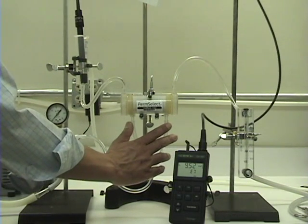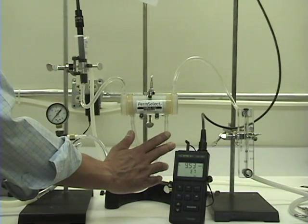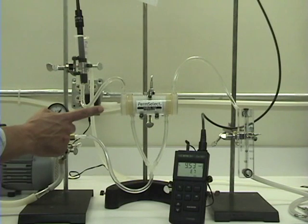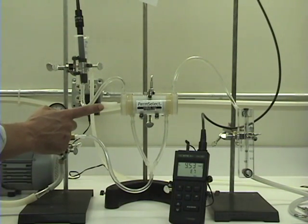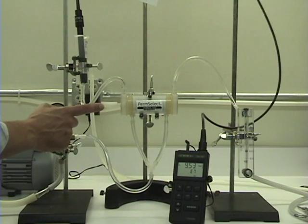Vacuum is applied to the shell side at these two bottom ports. The center port is plugged if no sweep gas is used on the shell side. Sweep gas may be used to reduce the potential for condensation.